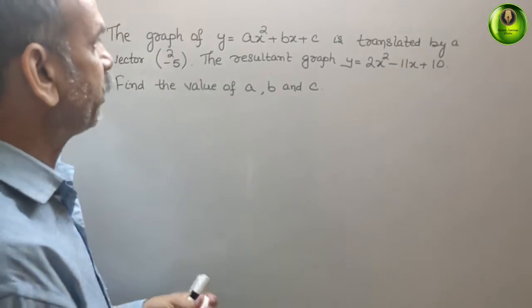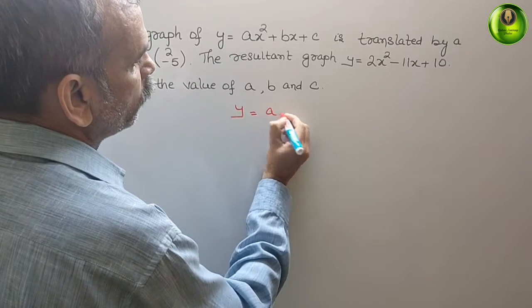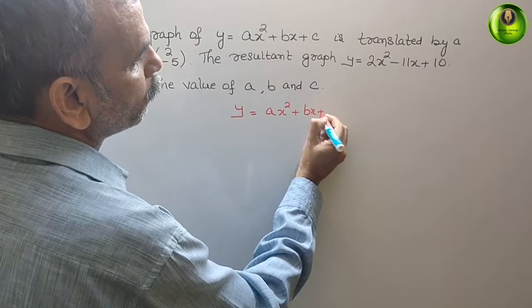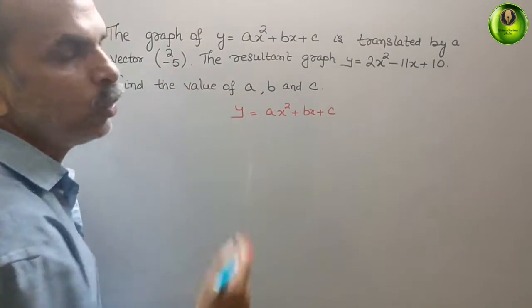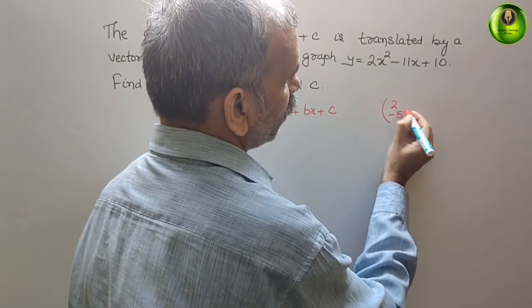Now, what they have given? y equals ax² plus bx plus c. And the vector they have given: 2 comma minus 5.